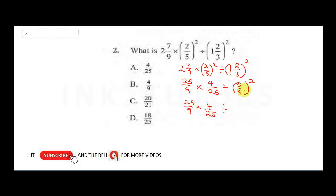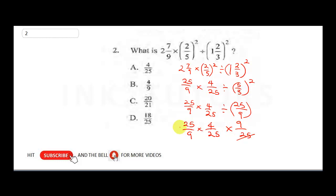This gives us 25 over nine times four over 25, divided by 25 over nine. We don't need to square it any further. Change the division sign to multiplication and flip: 25 over 9 times 4 over 25 times 9 over 25. The 25s cancel and the 9s cancel, giving a final answer of 4 over 25. The correct answer is A.